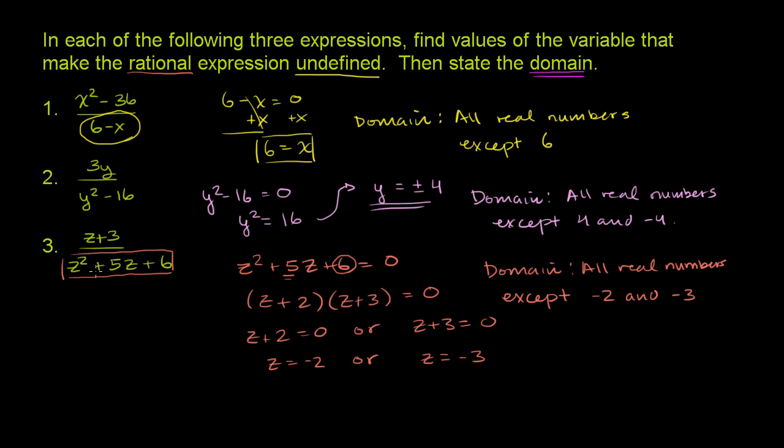And I want to make it clear, because we're going to start simplifying expressions like this. And you might say, OK, this expression over here is the same thing as z plus 3 over z plus 2 times z plus 3. And there'll be a temptation here to say, hey, look, I've got a z plus 3 in the numerator. I have a z plus 3 in the denominator. Can't I just divide the numerator and denominator by z plus 3 and have them cancel out? And then you would get 1 over z plus 2.